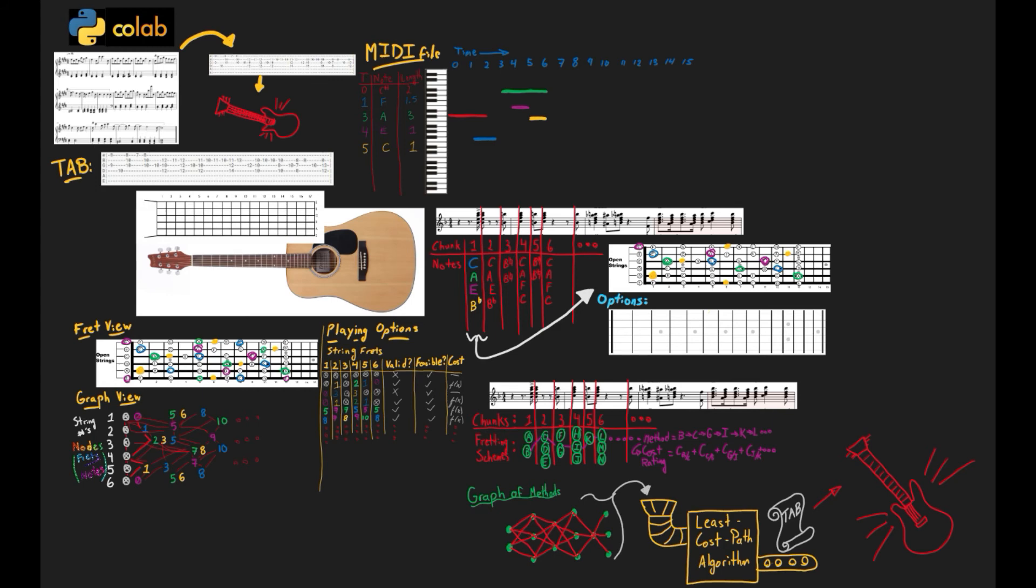On the other hand, if a poorly defined cost function is used, the program can define chords that are more difficult than their cost function actually reflects, making a tab overly difficult to play or even unplayable.